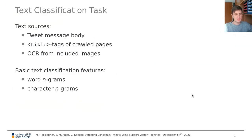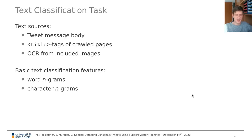For the first sub-task we focused on text classification and our sources of text were the tweet message body — an obvious choice — and in addition we also crawled websites that were linked in the tweets and extracted the content of the HTML title text from those pages.